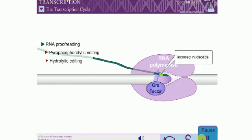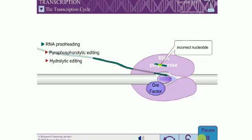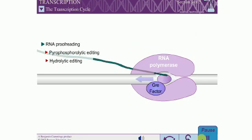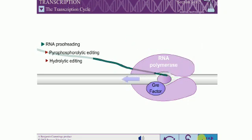The second mechanism is called hydrolytic editing, and involves backtracking of the polymerase by one or more nucleotides to cleave the RNA product. In bacteria, hydrolytic editing is stimulated by GRE factors, which also serve as elongation stimulating factors.